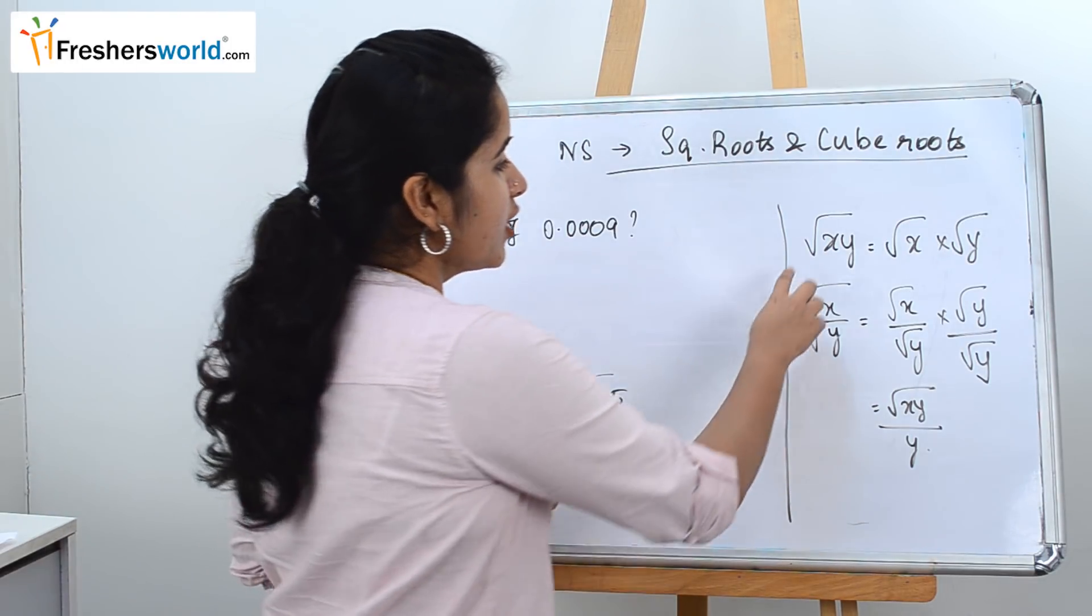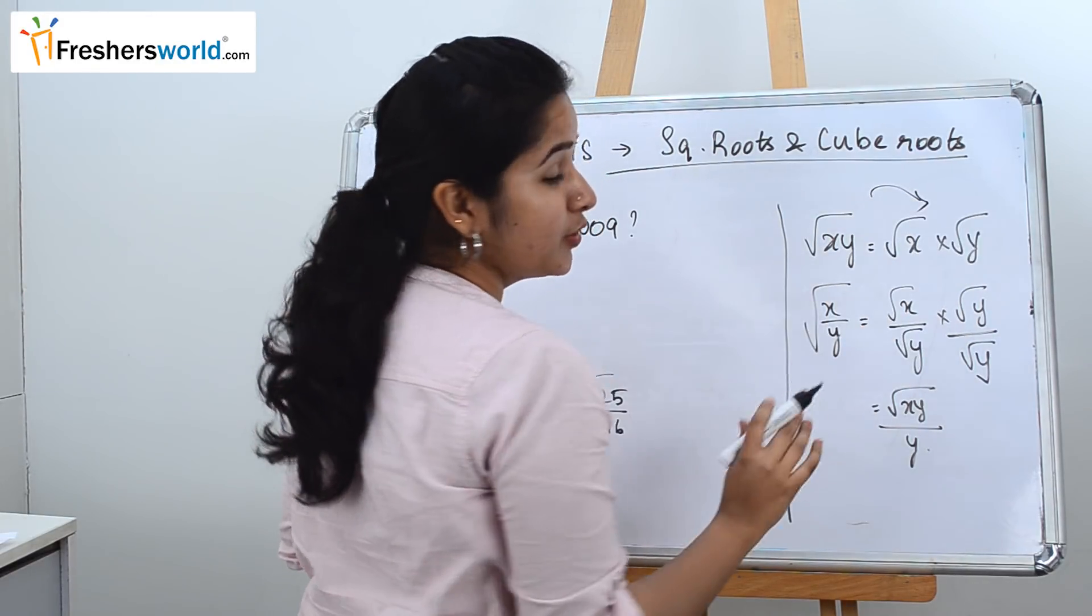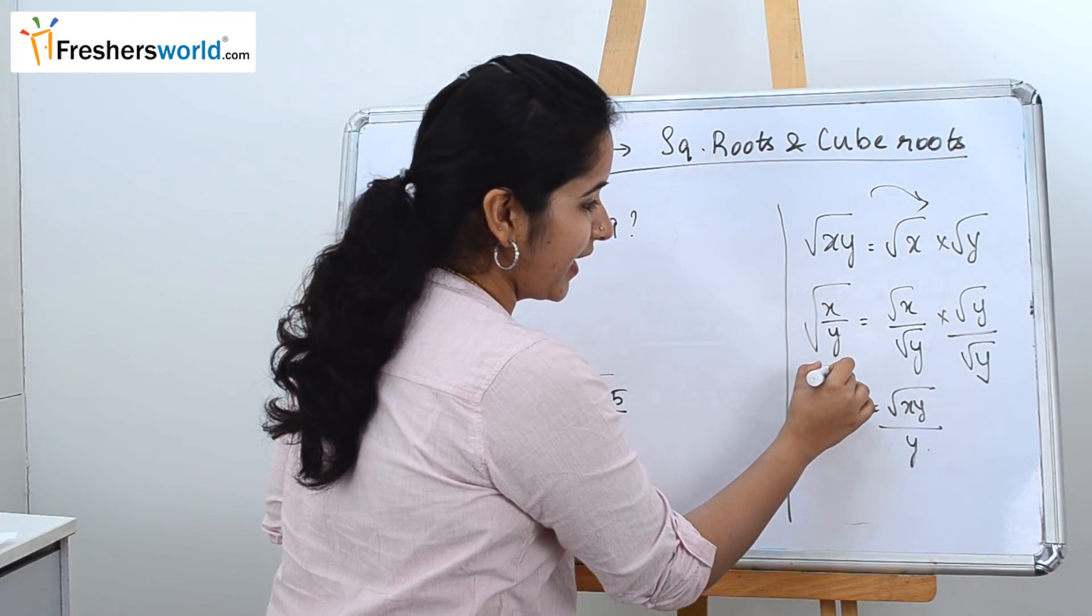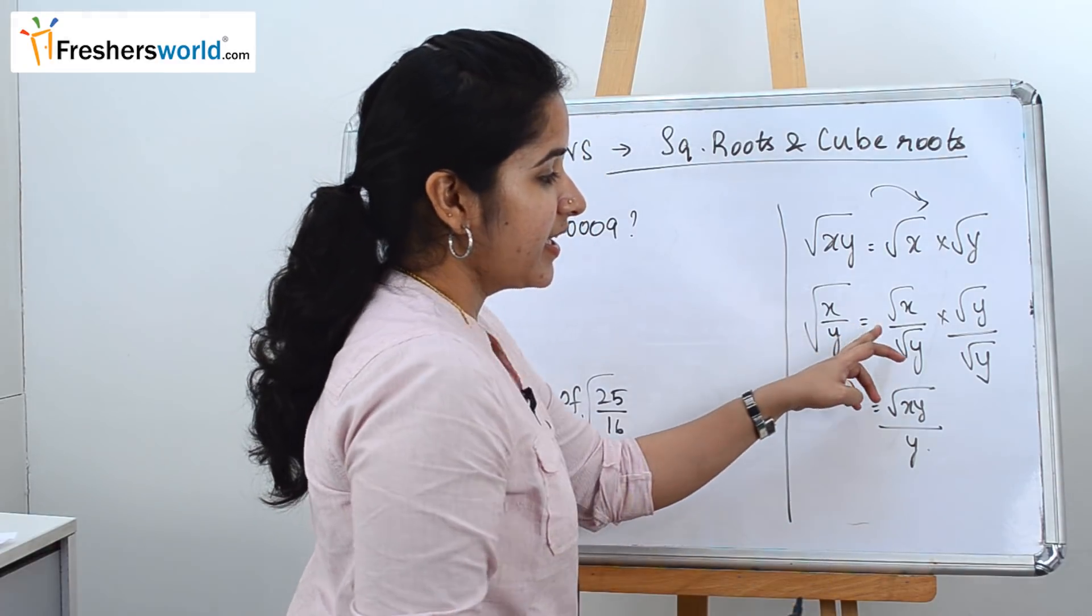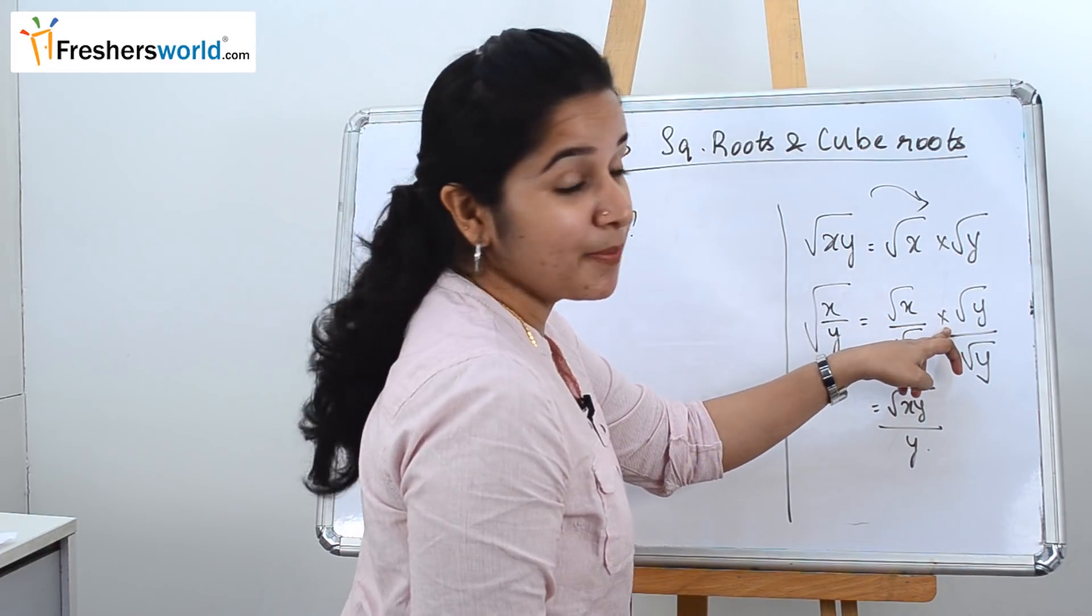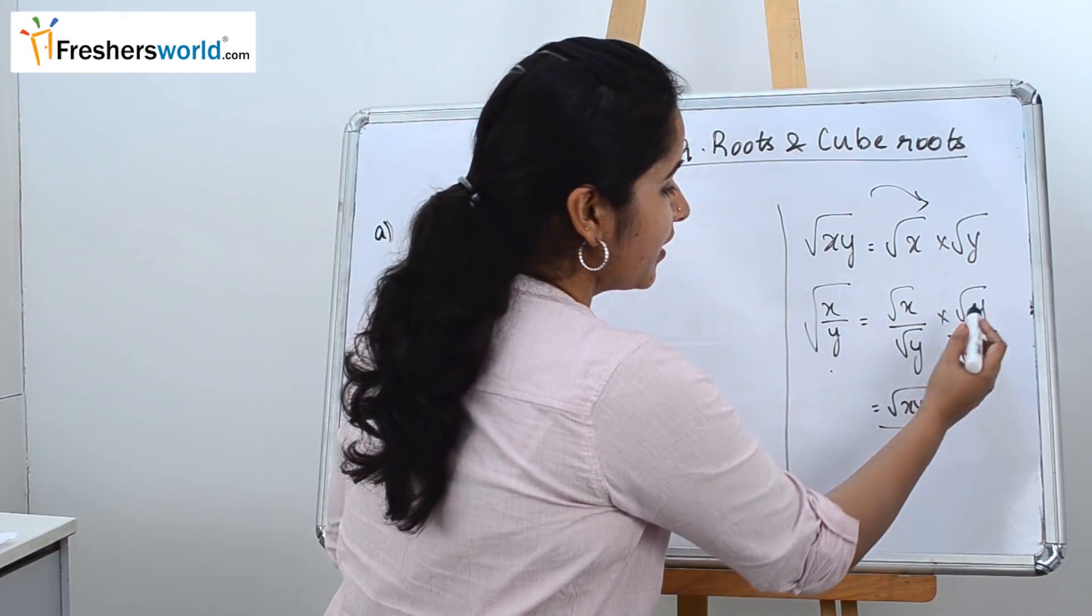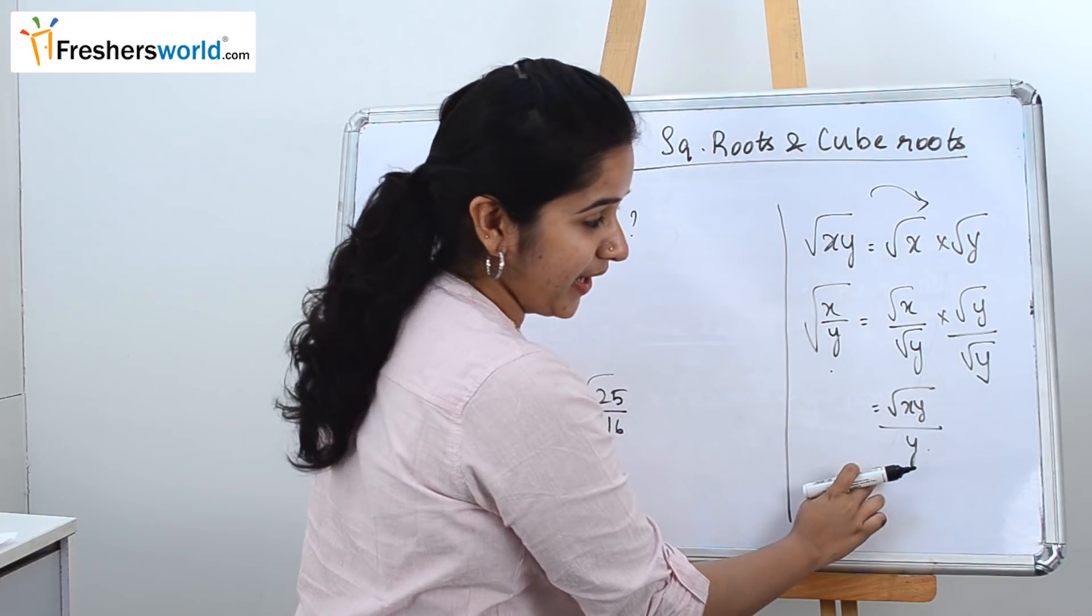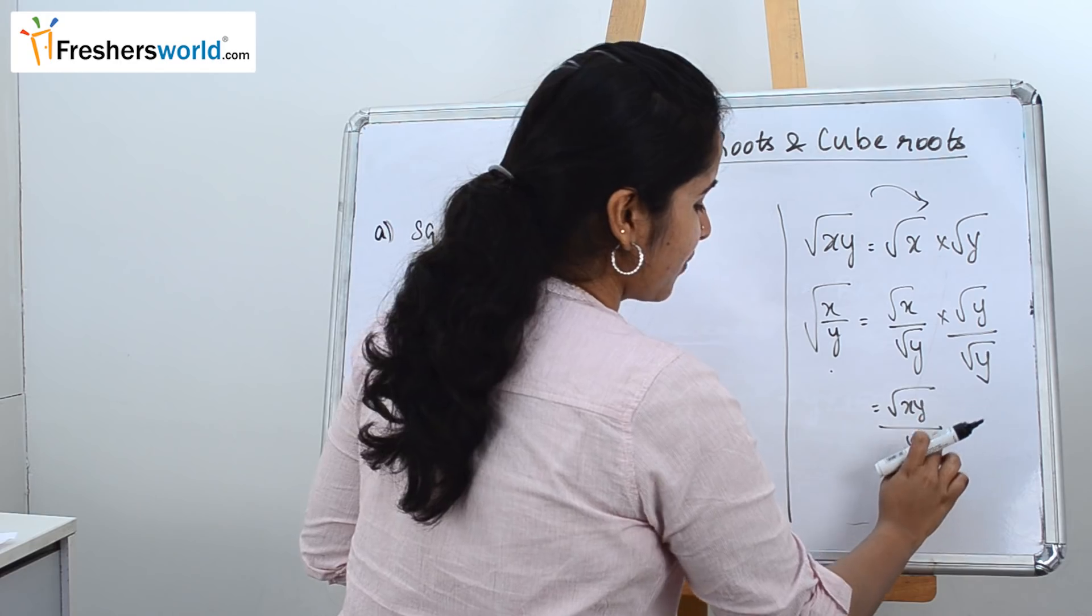So the basic of it is root of xy is nothing but which can be rewritten as root of x into root of y. Similarly, the root of x by y can be written as root of x by root of y, and it can be rewritten by multiplying the same digit in the numerator and the denominator. So if you do that, both square roots become a normal one. Root of y into root of y becomes y, and root of x into root of y can be rewritten as root of xy by y.